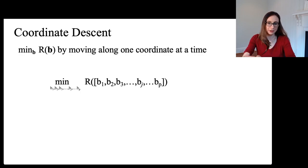Here we have our multivariate function, and we're going to try to minimize it with respect to all of these different b1, b2, b3, b4, all the way up to bp, and we're going to minimize it just by changing one coordinate at a time.